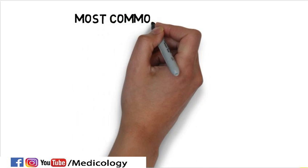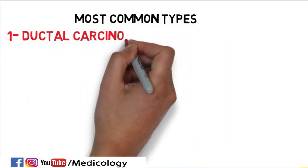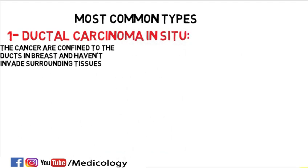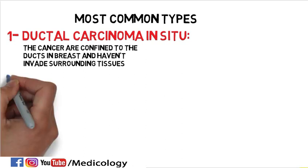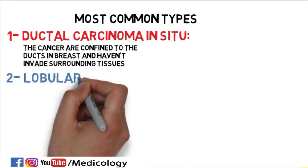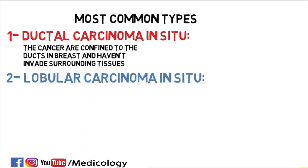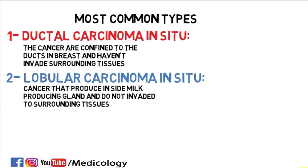The most common types: number one, ductal carcinoma in situ — the cancer is confined to the ducts in the breast and hasn't invaded surrounding tissue. Number two, lobular carcinoma in situ — cancer that originates inside milk-producing glands and does not invade the surrounding tissue.